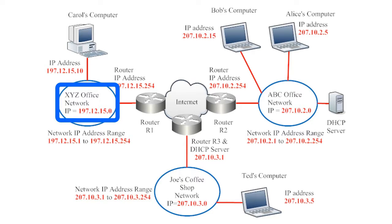Every IP address is numerical. They are always written as four sets of digits, each separated by a period. Each of these four sets of digits can be any number from 0 to 255. The XYZ network's IP address is 197.12.15.0, and all devices connected to the XYZ network will be assigned IP addresses that begin with the first three sets of digits: 197.12.15.